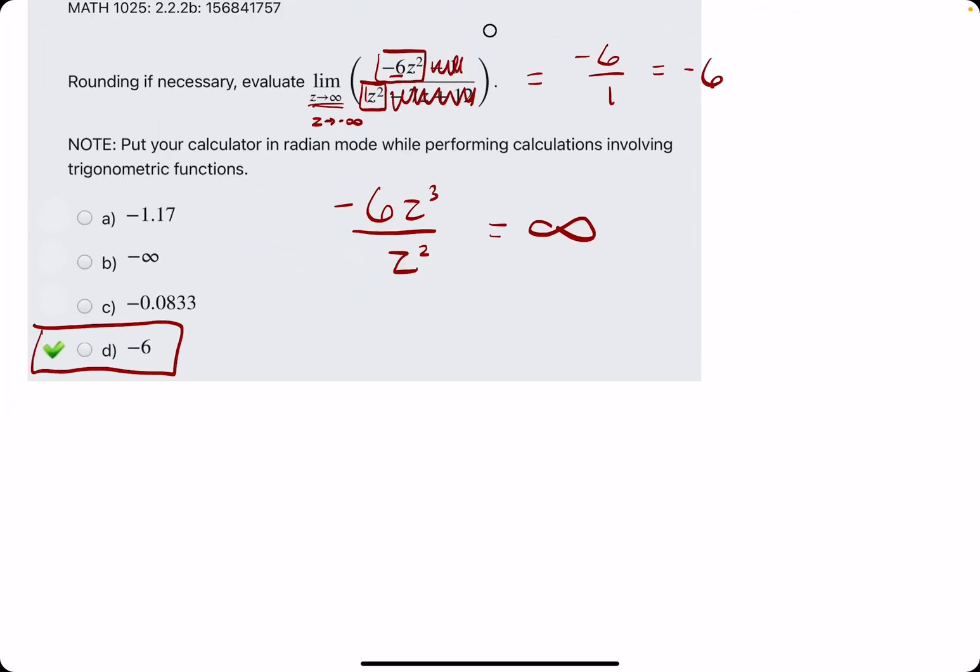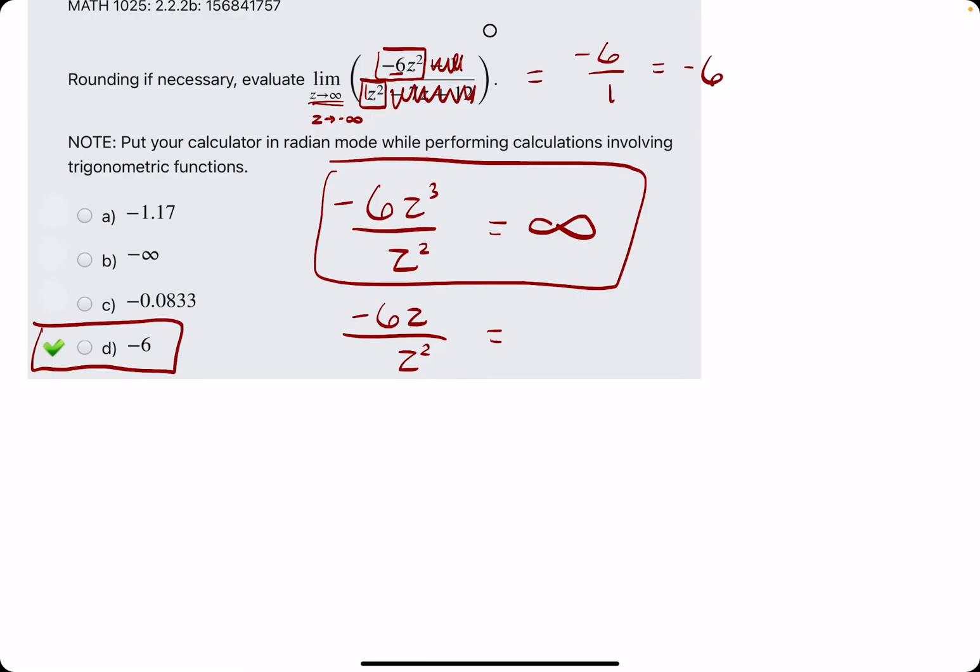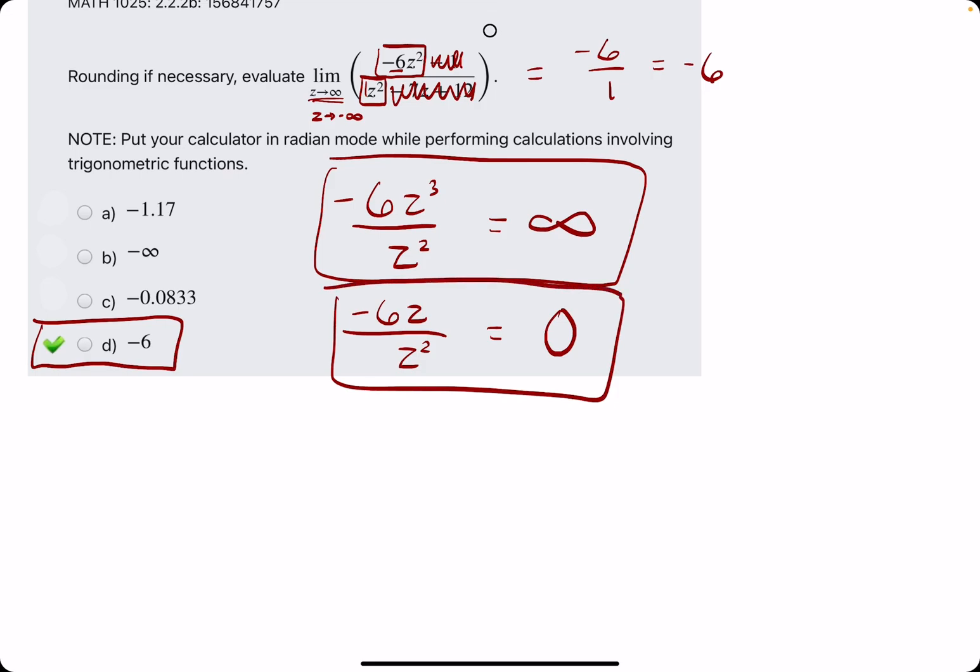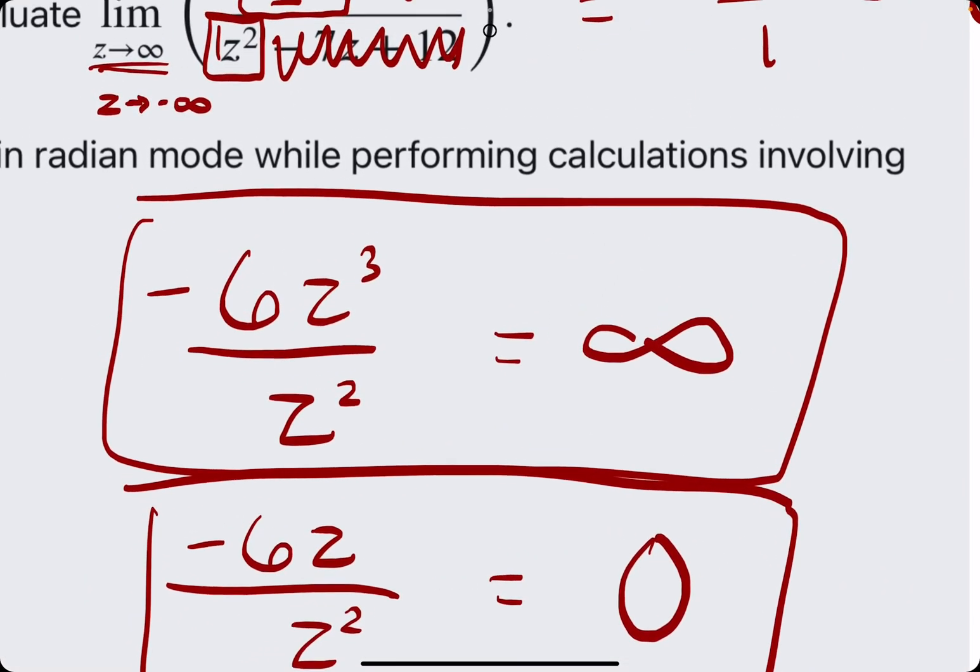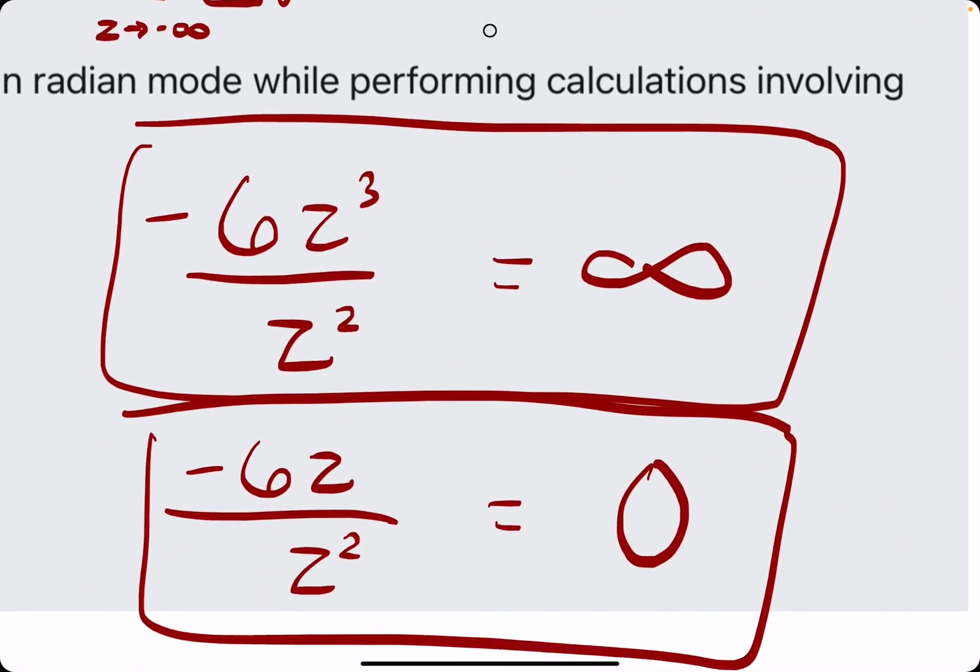And then if you have the opposite case, say we had negative six z over z squared, and the degree in the bottom was larger than that at the top, then this would go to zero. So if the degree on top is larger, the limit goes to infinity. If the degree in the bottom is larger, the limit goes to zero.